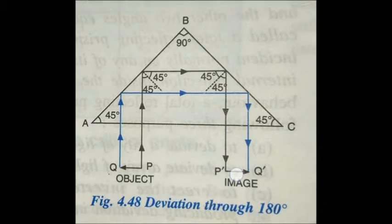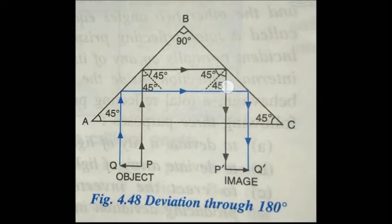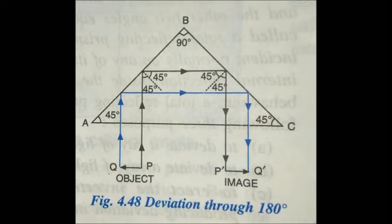An inverted image P'Q' is formed. Inside the prism, total internal reflection takes place on two faces, and thereby the ray of light gets deviated by 180 degrees. This action of the prism is used in binoculars and cameras to invert the image without any loss in intensity of light.